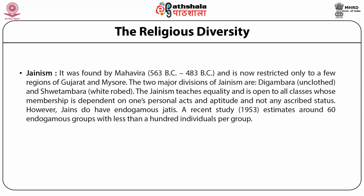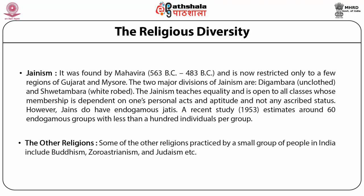Jainism was founded by Mahavira and is now restricted only to a few regions of Gujarat and Mysore. The two major divisions of Jainism are Digambara and Shvetambara; Digambara are unclothed and Shvetambara are white-clad. Jainism teaches equality and is open to all classes, where membership is dependent on one's personal acts and aptitude and not any ascribed status. However, Jains do have endogamous Jatis, with a recent study estimating around 60 endogamous groups. Other religions practiced by small groups in India include Buddhism, Zoroastrianism and Judaism.